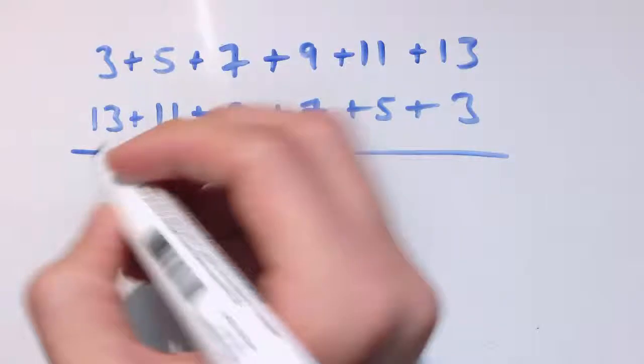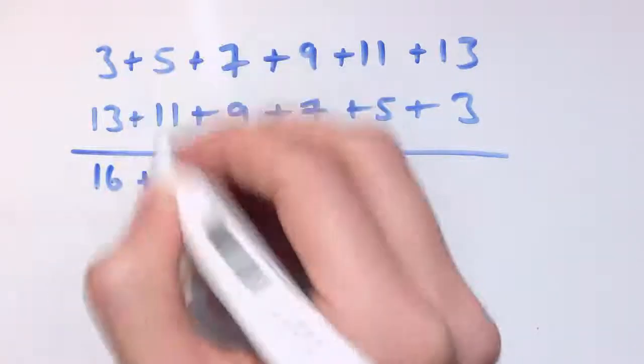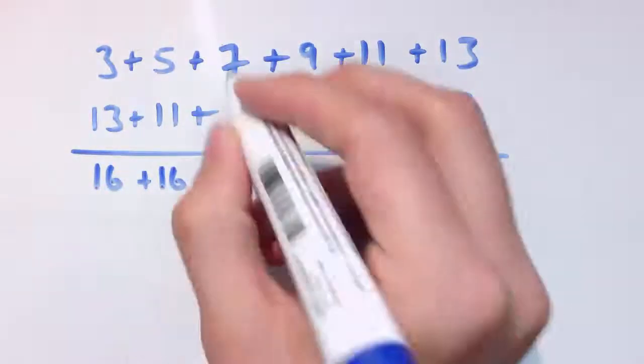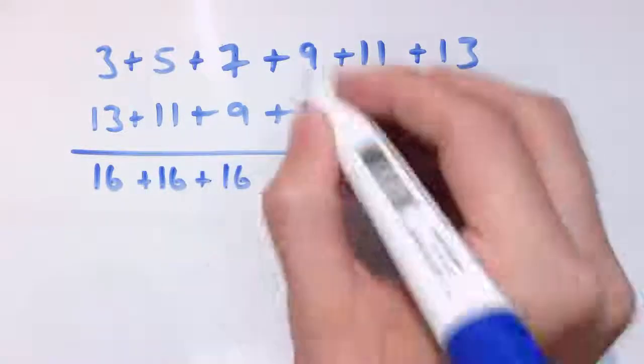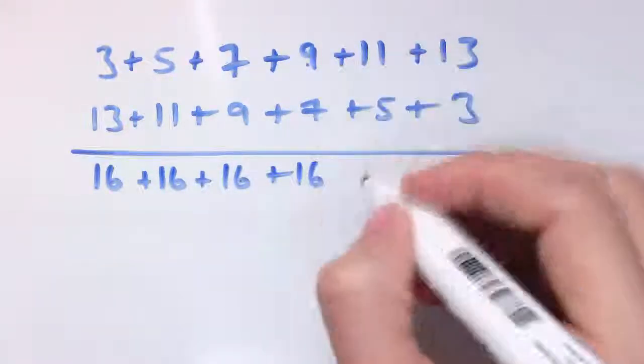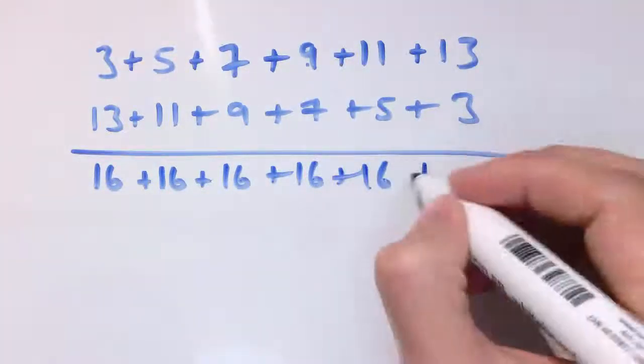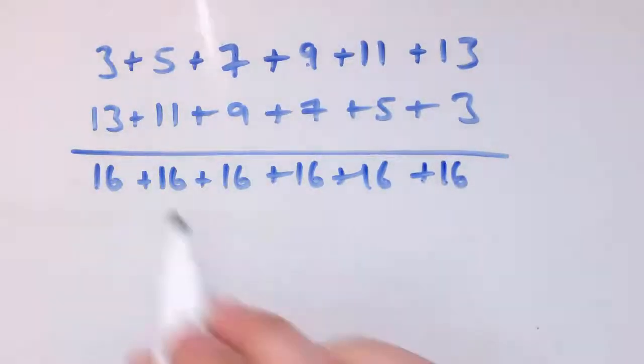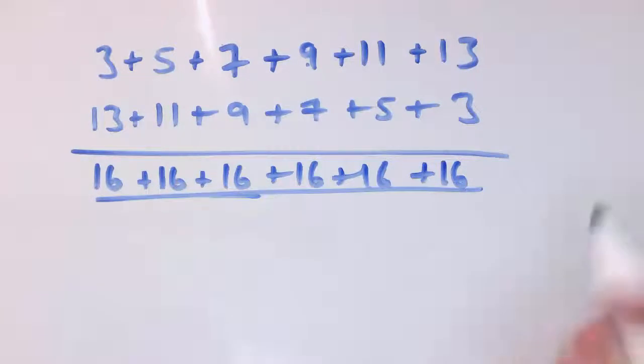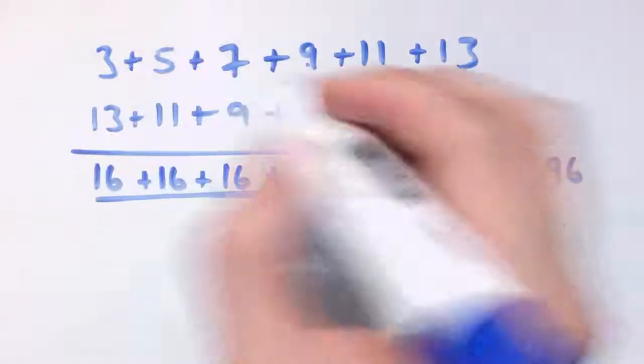3 plus 13 here, that's 16. 5 plus 11, that's also 16. 7 plus 9, that's 16. 9 plus 7 is 16. 11 plus 5 is 16. 13 plus 3 is 16. So I've actually just got here 6 lots of 16, which is 96.